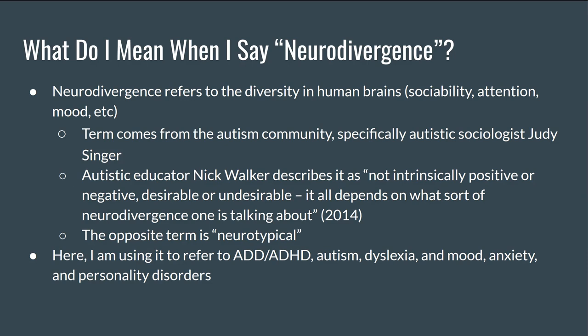Over the years, its meaning has expanded to cover many variations in thought and behavior. Some people object to its use because they feel it implies there are no downsides to some of these conditions, but it's not intended to diminish the difficulty of adapting to a particular condition or living in a world that doesn't accommodate us. Autistic educator Nick Walker describes it as not intrinsically positive or negative, desirable or undesirable — it all depends on what sort of neurodivergence one is talking about.